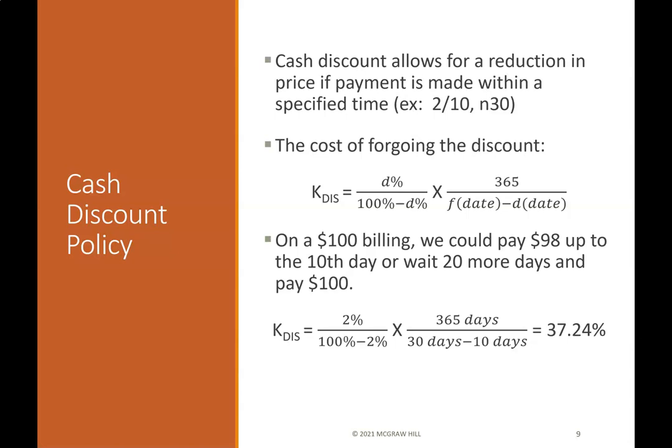On a $100 billing, you could pay $98 up to the 10th day or wait 20 more days and pay $100. K-dis equals 2% divided by (100% minus 2%), times 365 days divided by (30 days minus 10 days), which equals 37.24%.